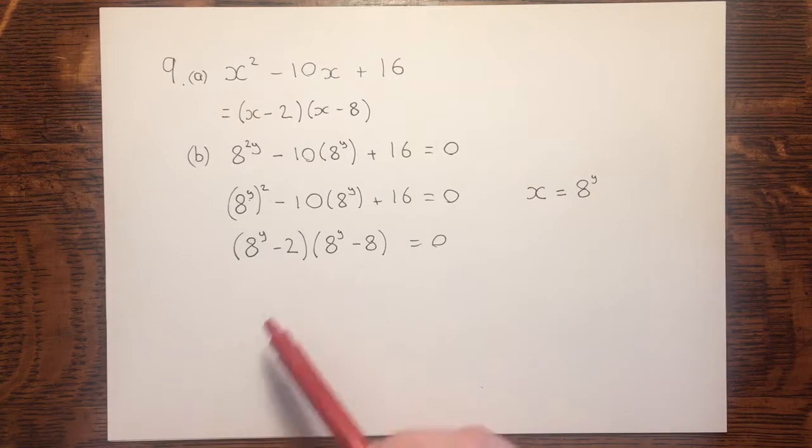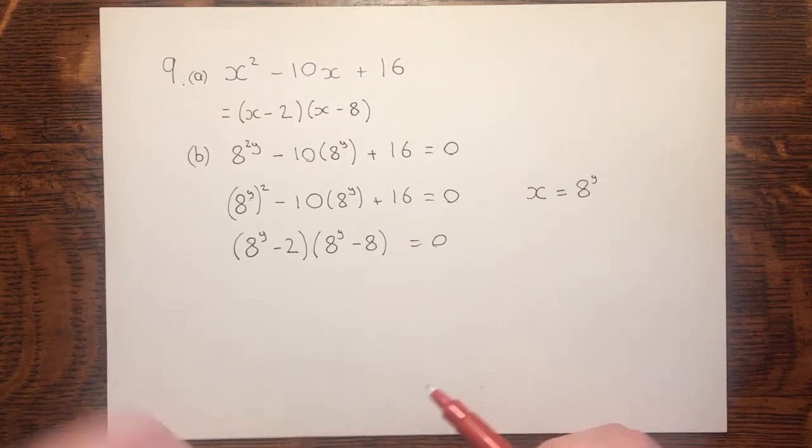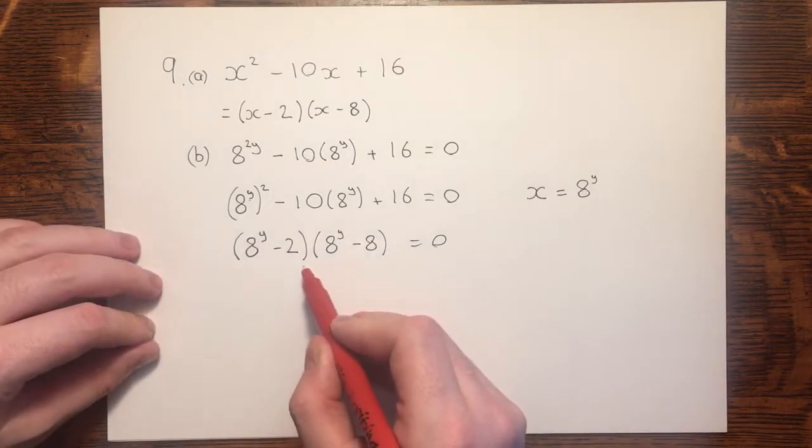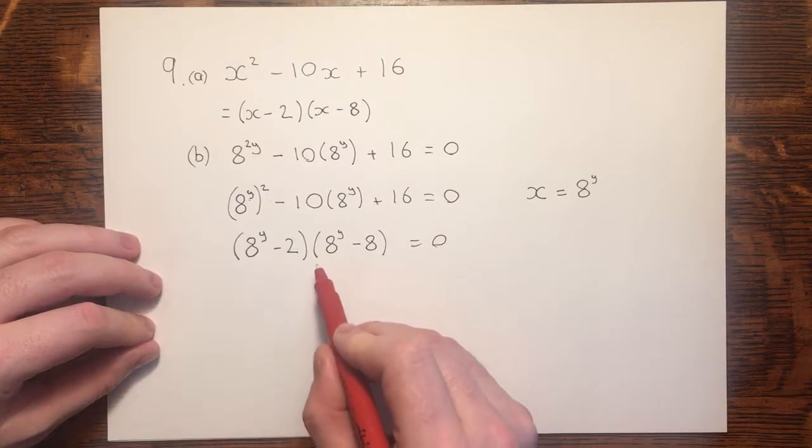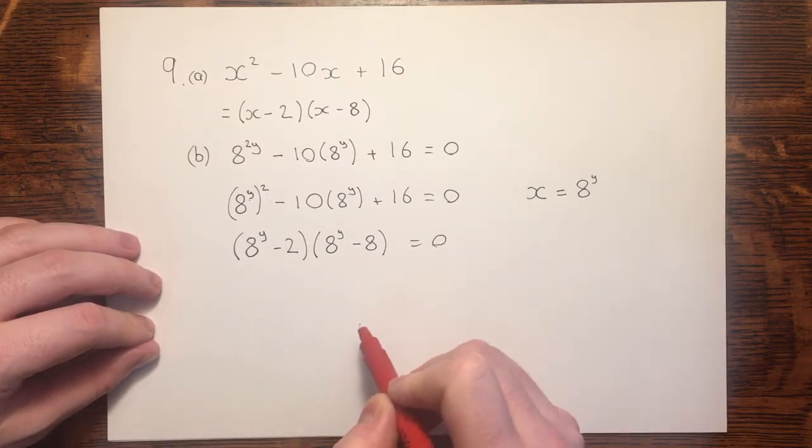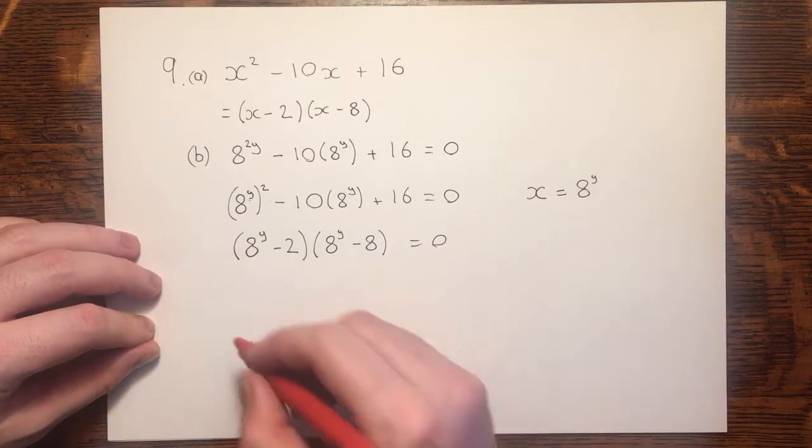All that remains now is to solve. This bracket would equal 0, or this bracket could equal 0, to make this equation true. So let's start with this one.